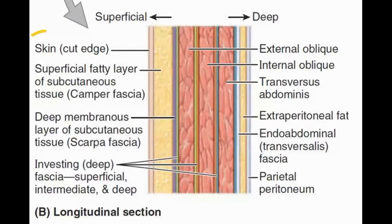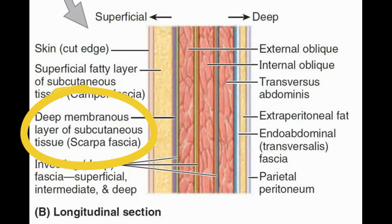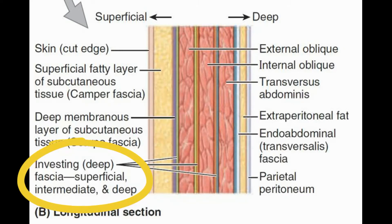Moving on to our nine layers. We'll start with SSF — you can remember it as 'seals swim fast.' The first S stands for the skin. The second S stands for subcutaneous tissue — we have the superficial layer known as Camper's fascia and the deep layer known as Scarpa's fascia. Then the F is for the investing fascia or deep fascia — with superficial, intermediate, and deep layers. Those are the first four superficial layers.